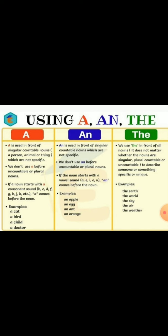Let's see the use of a, an, and the in sentences. A is used in front of singular countable nouns. We don't use a before uncountable or plural nouns. If a noun starts with a consonant sound like b, c, d, f, etc., a comes before the noun.